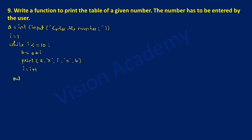Now let us check out the output. Once we execute this program it will ask the user to enter the number. Here for example I am going to enter 5, so 5 will be stored in variable a. The value of i is 1. We check the condition in the while loop: i is 1, and 1 is less than or equal to 10 — yes, condition is true. Once this condition is true all three statements will get executed. The first statement: b is equal to a, which is 5, into i, which is 1.